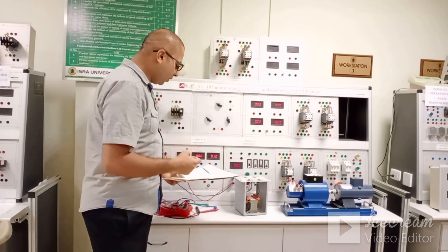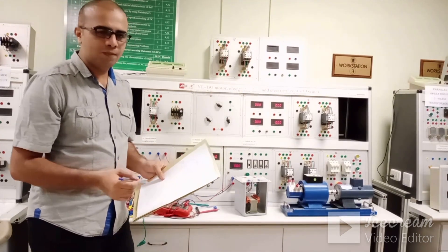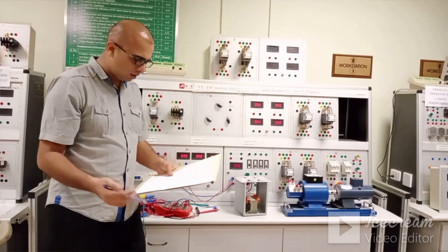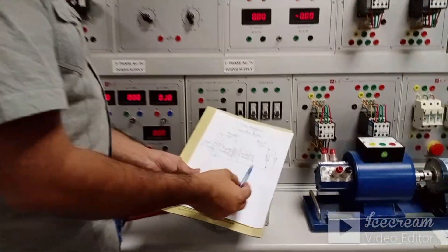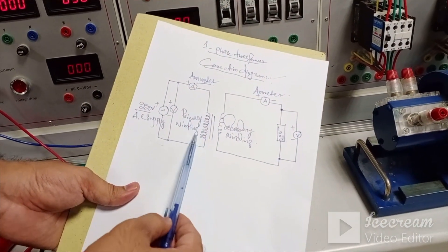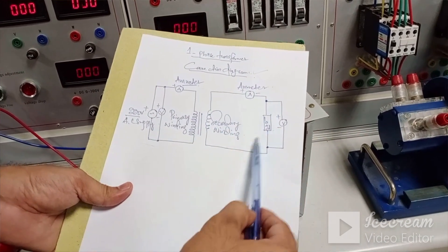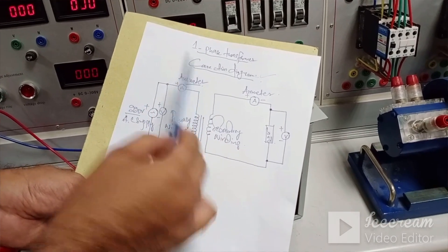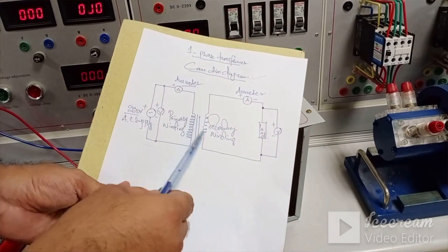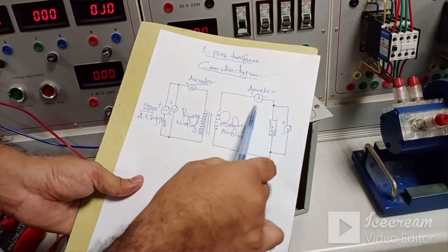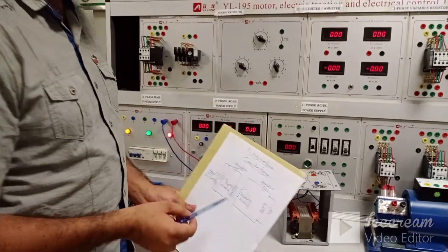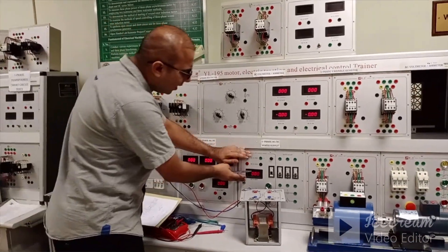Now we are going to perform the experiment. According to the construction and connection diagram, we have to implement this diagram on this transformer to measure parameters from the primary side and the secondary side. In this diagram there are two windings — the primary winding connected to the source side and the secondary winding connected to the load side. There are two ammeters: one for the primary side current and one for the load side current, and voltmeters for each side. This is the main power supply module and the adjustable single-phase power supply module.